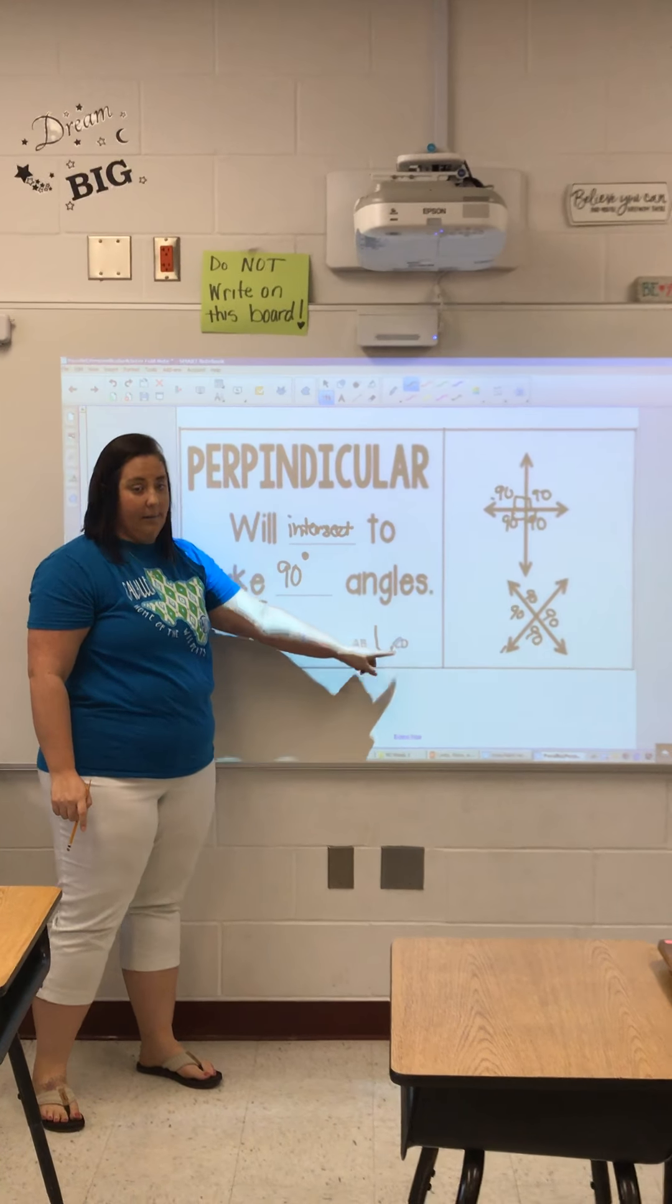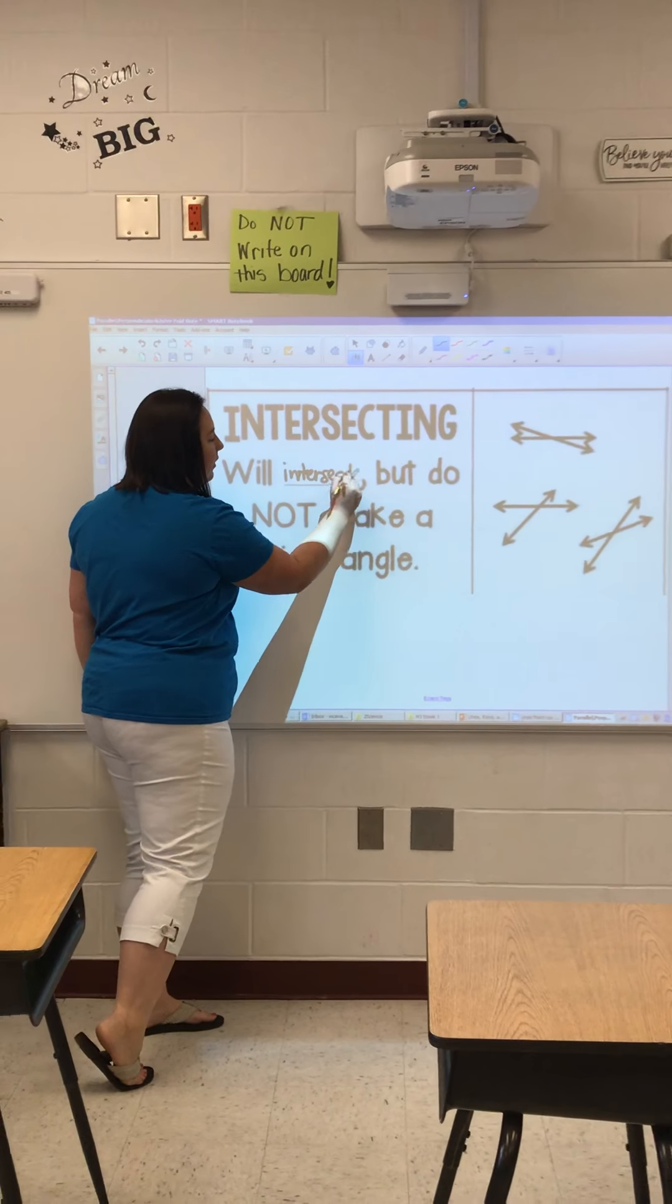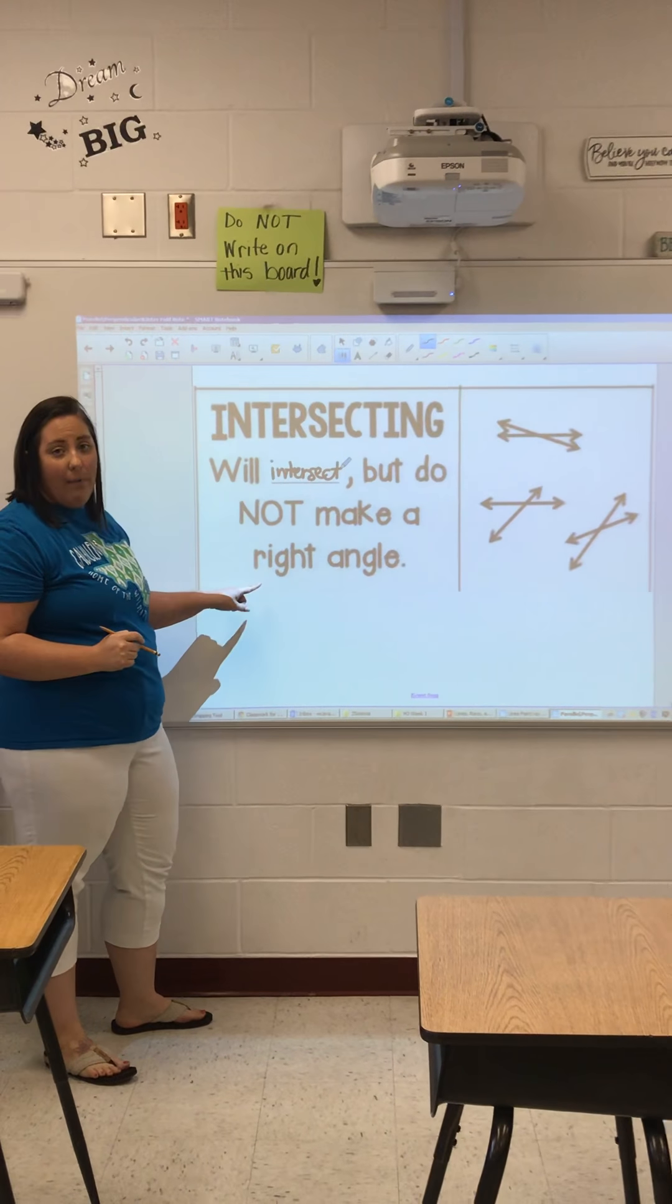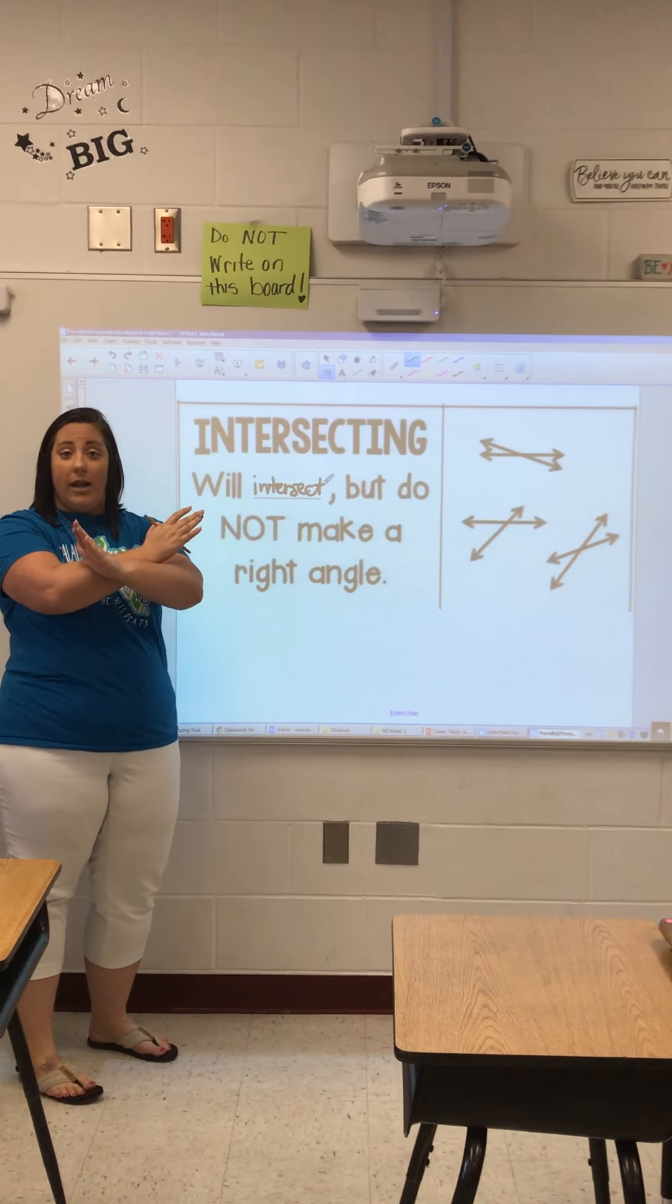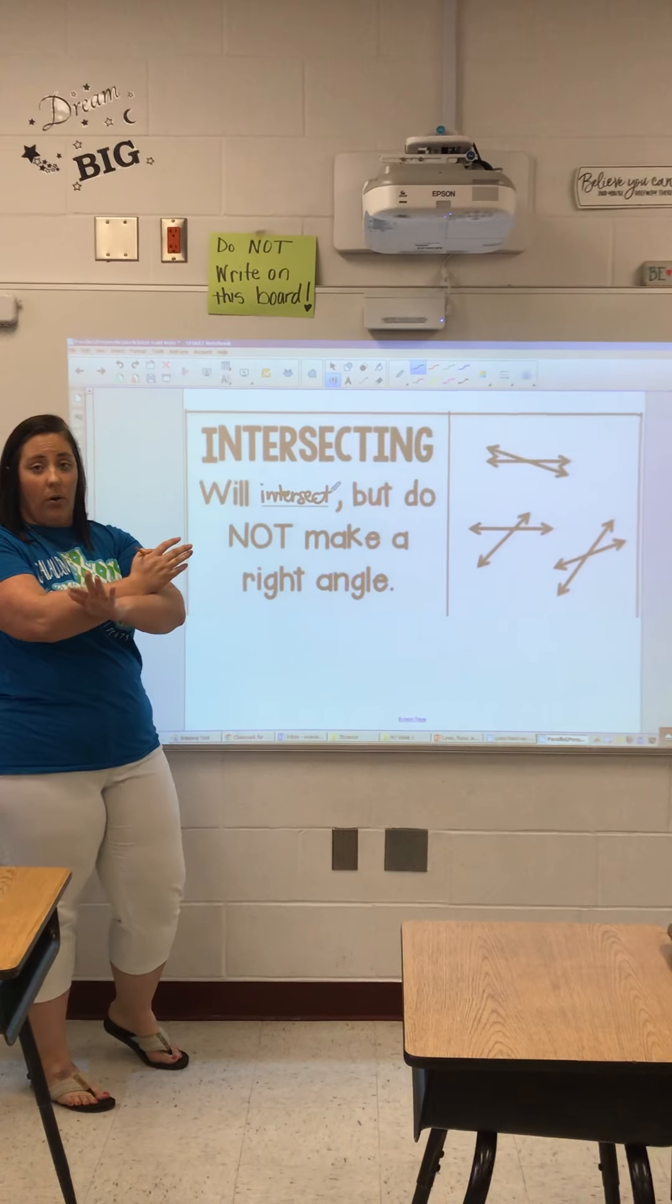And last but not least, we have the intersecting lines. These lines will intersect, but do not make a right angle. So, they will intersect, they will cross, but they're not going to make a right angle, or 90 degrees.